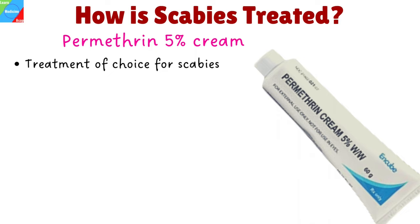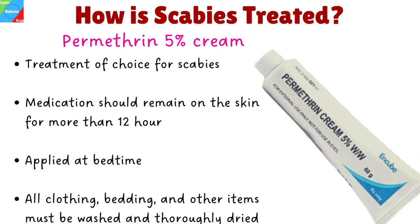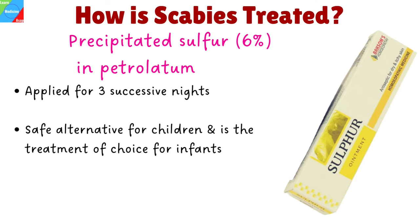How is scabies treated? The most common method is to use topical prescription creams, lotions, and ointments to eradicate the infestation. The treatment of choice for scabies in adults and children is Permethrin 5% Cream. Medication should remain on the skin for more than 12 hours, preferably 24 hours, and then washed off. Permethrin is applied at bedtime and washed off in the morning. In the case of Norwegian scabies, multiple applications are often necessary. All clothing, bedding, and other items that have been in intimate contact with the patient must be simultaneously washed and thoroughly dried. Precipitated sulfur and petrolatum applied for three successive nights is a safe alternative for children and is the treatment of choice for infants less than two months of age.